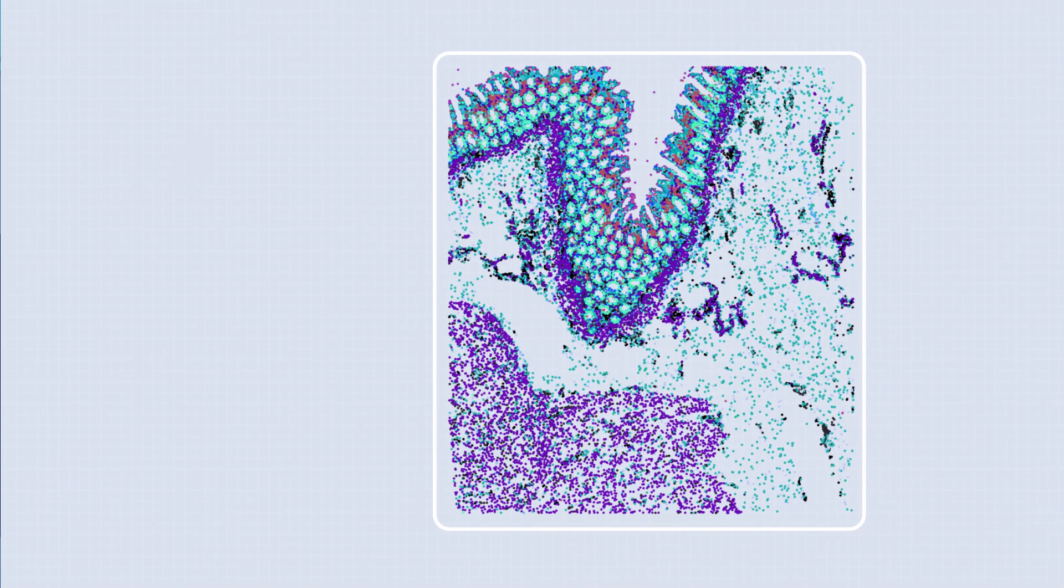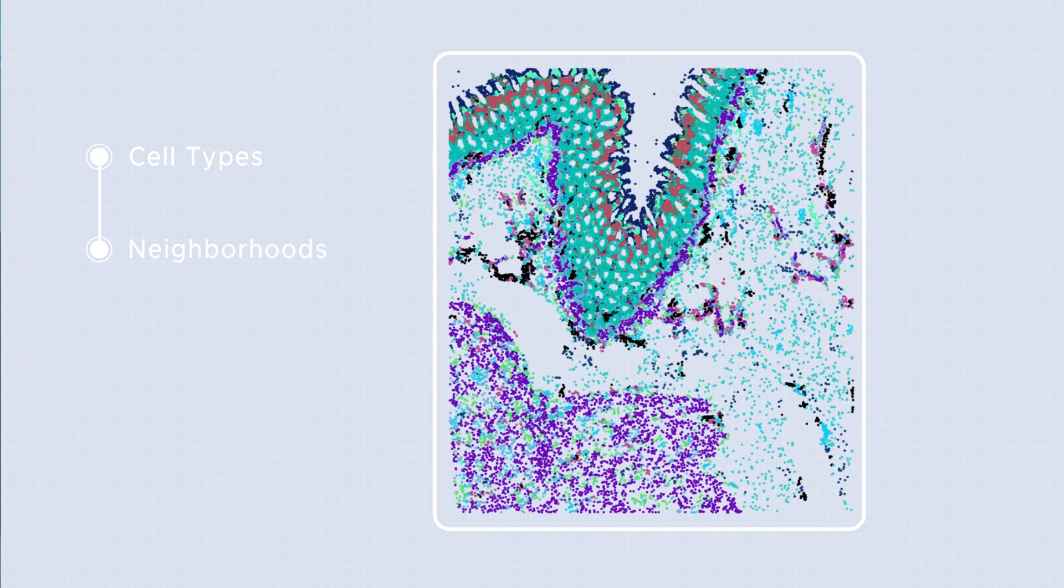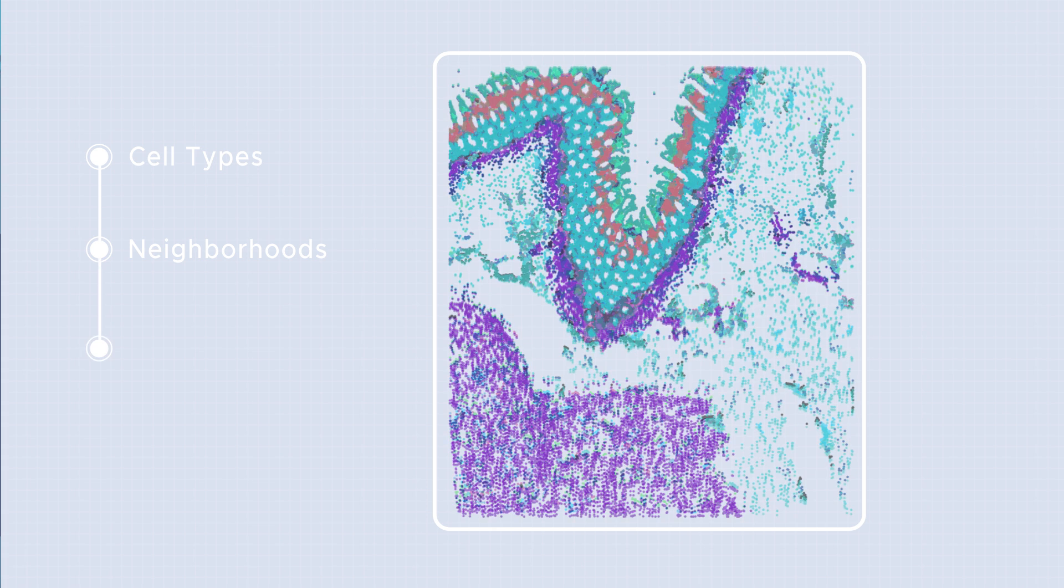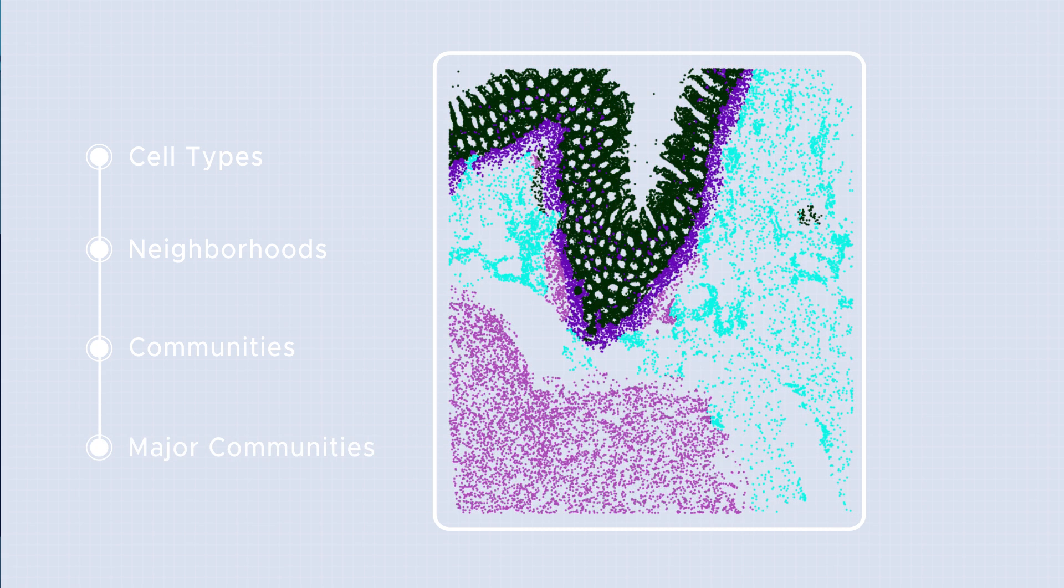To understand the organization of our cells, we use algorithms that analyze the cells like a city. We start by identifying individual cells, then group them into local neighborhoods of similar cells. Within this context, we also look at how cells interact within a neighborhood and how these neighborhoods form larger communities or structures in tissues.